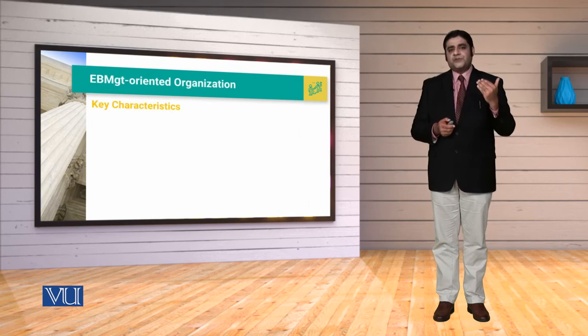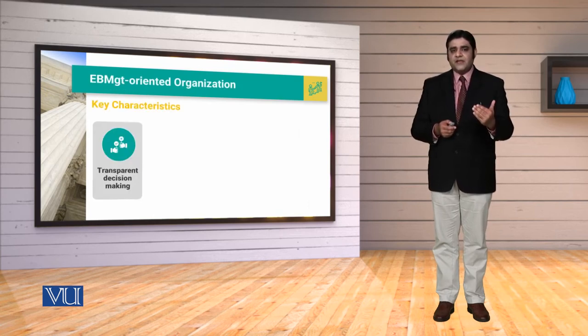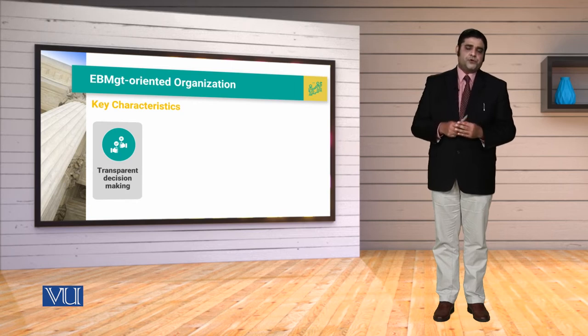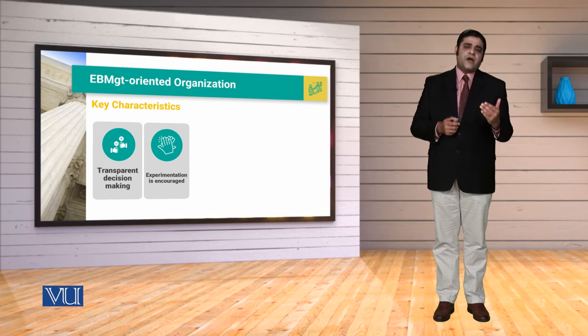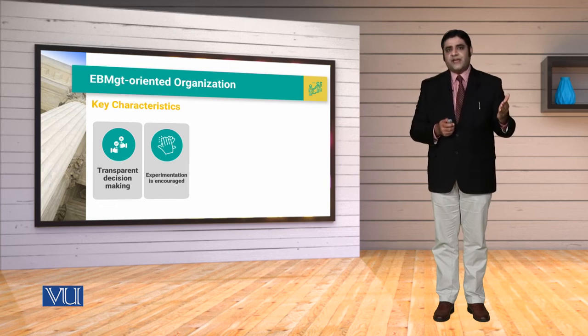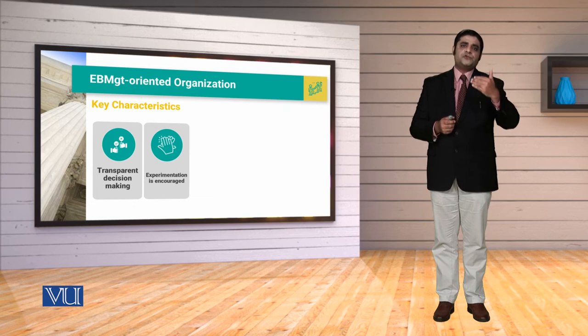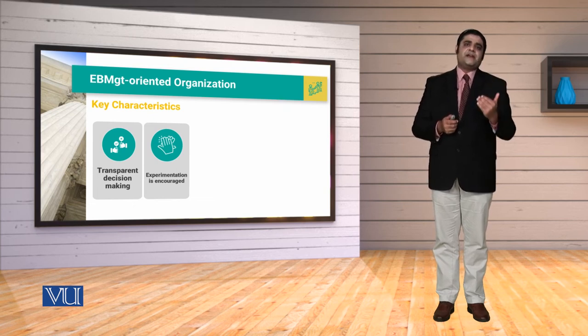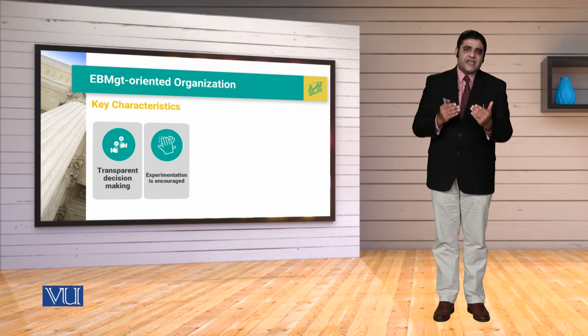اس کے علاوہ evidence-based management میں یہ characteristics بھی ہیں: ہمارا decision making transparent ہو، تمام stakeholders involved ہوں اور ان کے ساتھ ہر قسم کا data shared ہو — open book management کریں تو clarity اور transparency create ہوگی۔ دوسری بات یہ کہ experimentation is encouraged — experiments غلط بھی ہو سکتے ہیں، لیکن ہم اپنے نقصان سے بھی سیکھیں گے، کیونکہ غلطی سے learning ہوتی ہے۔